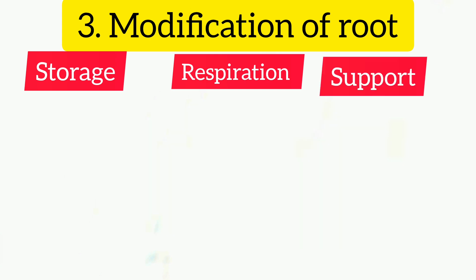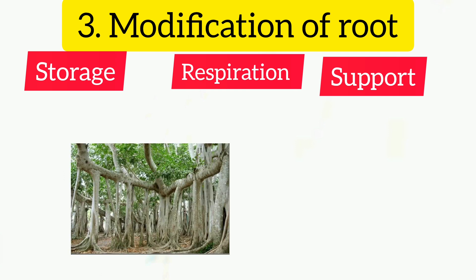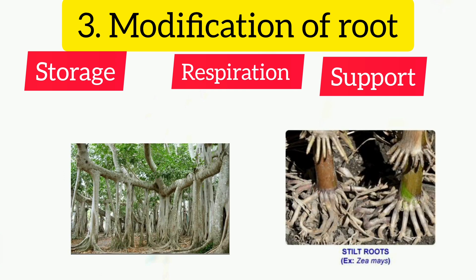Supportive roots are another type of root modification. There are two types: prop roots and stilt roots. Stilt roots grow from the base of the stem and provide mechanical support, as seen in fibrous-rooted plants like maize.